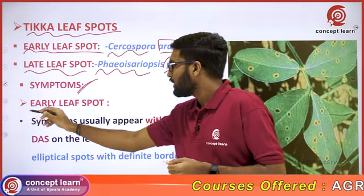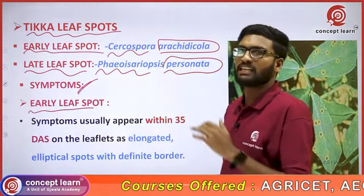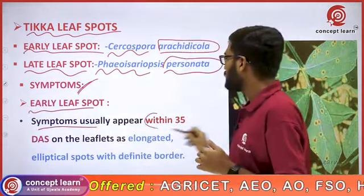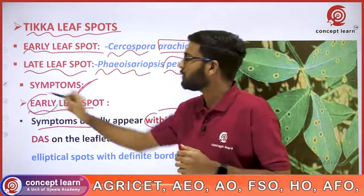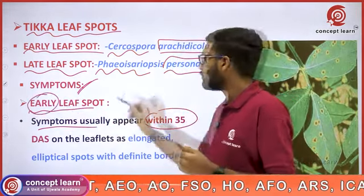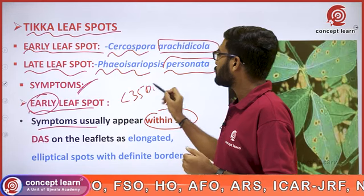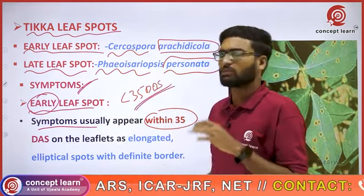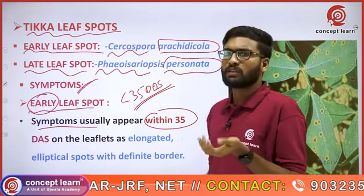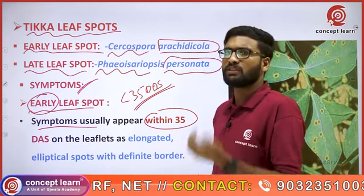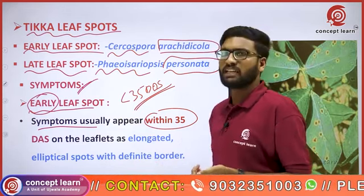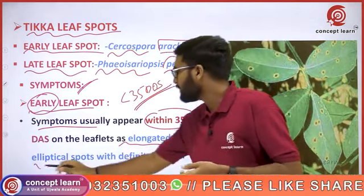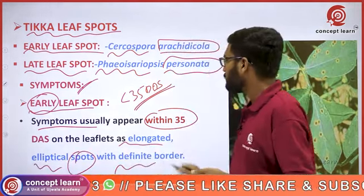Now the symptoms. First, early leafspot. Symptoms usually appear within 35 days of sowing. That is why it is known as early leafspot — because if the leafspot symptoms appear within 35 days after sowing, we call it early leafspot. The symptoms include elongated elliptical spots with a definite border.